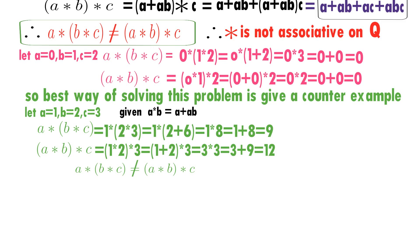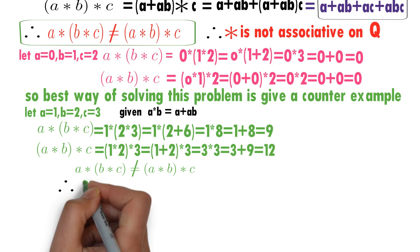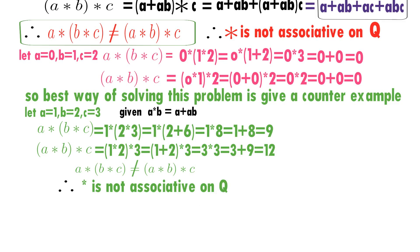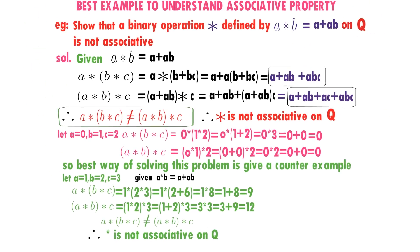When star is associative, you must be very careful — don't just give an example. Therefore, star is not associative on the set of all rational numbers. I hope you understand this class.